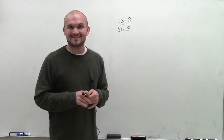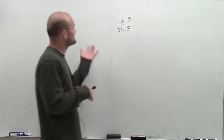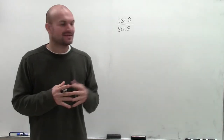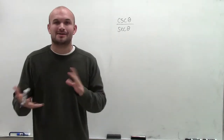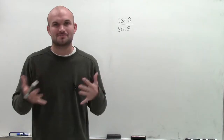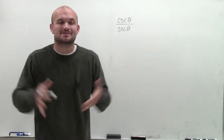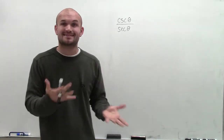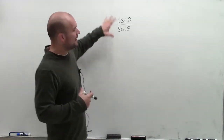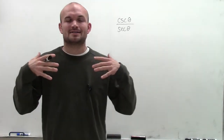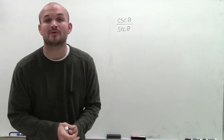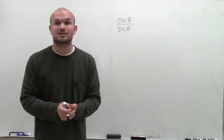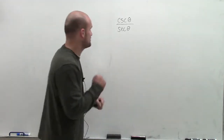Rational expressions — this is where the fun starts. So I have cosecant of theta divided by the secant of theta, and we're going to try simplifying this out. A lot of times when we get to rational expressions, this is where students start having their hiccups with fractions and rational terms. However, we're going to use the same type of reasoning we've done before: if we can't automatically simplify things, we're going to use our trigonometric identities to rewrite our expression.